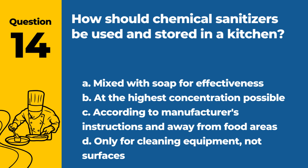Question 14. How should chemical sanitizers be used and stored in a kitchen? A. Mixed with soap for effectiveness. B. At the highest concentration possible. C. According to manufacturer's instructions and away from food areas. D. Only for cleaning equipment, not surfaces. Answer: C. According to manufacturer's instructions and away from food areas. Chemical sanitizers should be used and stored as per the manufacturer's instructions and kept away from food areas.